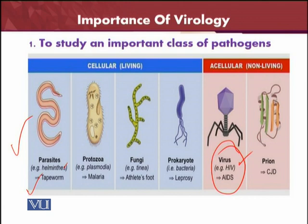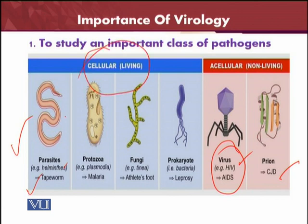Viruses cause very famous diseases — polio, which we discussed, and HIV/AIDS, which humans are still unable to control because it attacks our immune system. Then there are prions, the most recently discovered particles. We can divide all these microorganisms into two parts: cellular, which are living organisms causing disease, and acellular, which are non-living organisms causing disease.